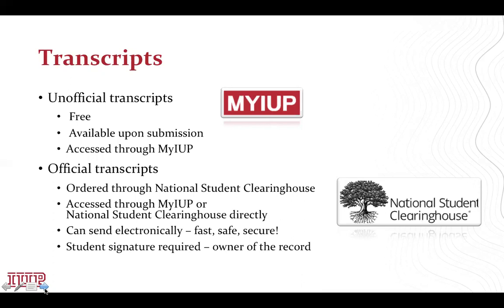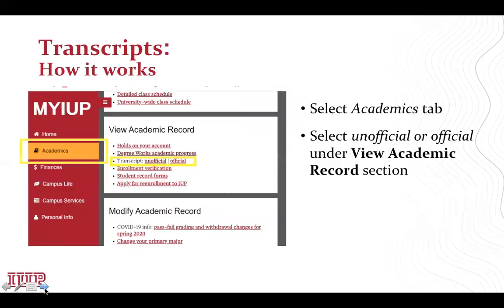You can send an official transcript electronically — it's fast, safe, and secure. You can also send an official transcript by mail if needed. A student signature is required since the student is the owner of his or her own educational record. Both types of transcripts can be accessed through MyIUP. First, navigate to the Academics tab, then select Unofficial or Official under the View Academic Records section.